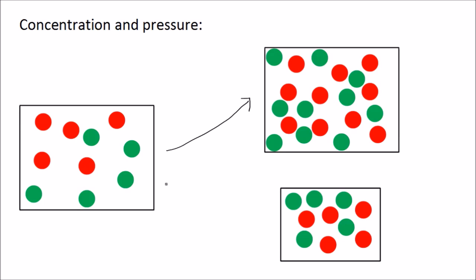Alternatively, if we increase the pressure — and here I've increased the pressure by making the container smaller — you can see that the particles are again more crowded together. So the frequency of collisions will increase, they are more likely to collide, and therefore the rate of reaction will increase.